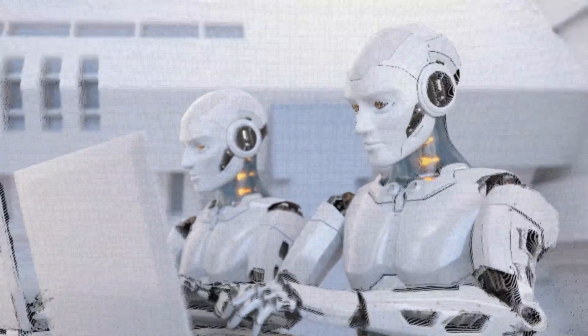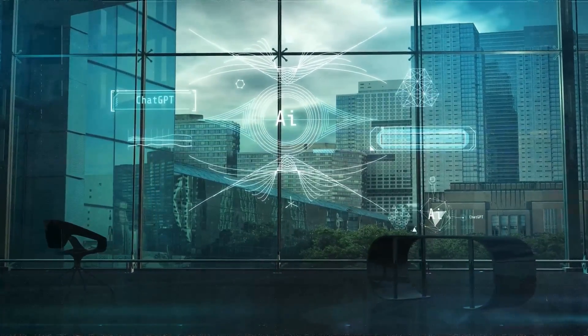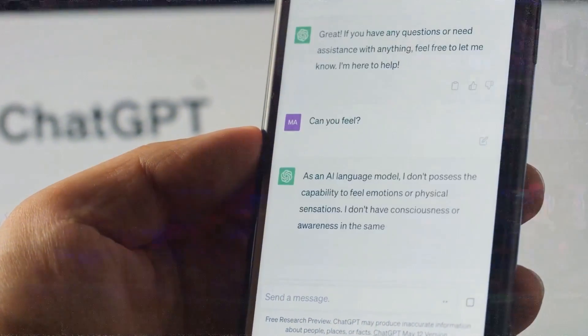The way models understand language is also different. They only learn from text and don't experience the real world like humans. So while they're good with words, they might not truly understand them. Lake believes that these models show that you can be good with language without truly understanding it.